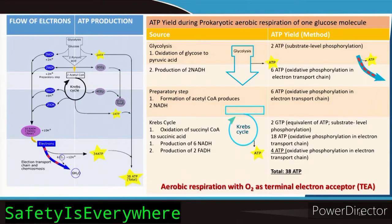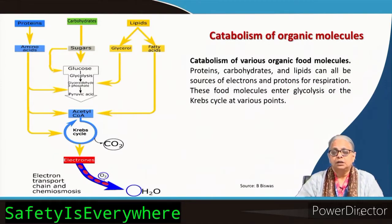At the end of the entire process, a C6 molecule has been converted to six CO2 and 38 ATP have been generated. This is the aerobic respiration pathway with oxygen as the terminal electron acceptor. This is the maximum that nature has been able to achieve with the best possible redox couple — glucose plus oxygen — giving 38 ATP.